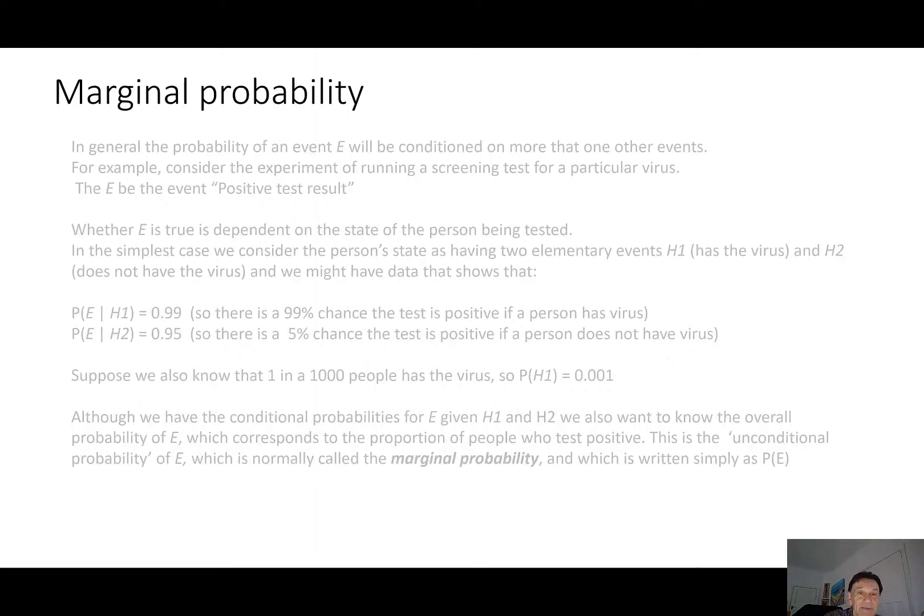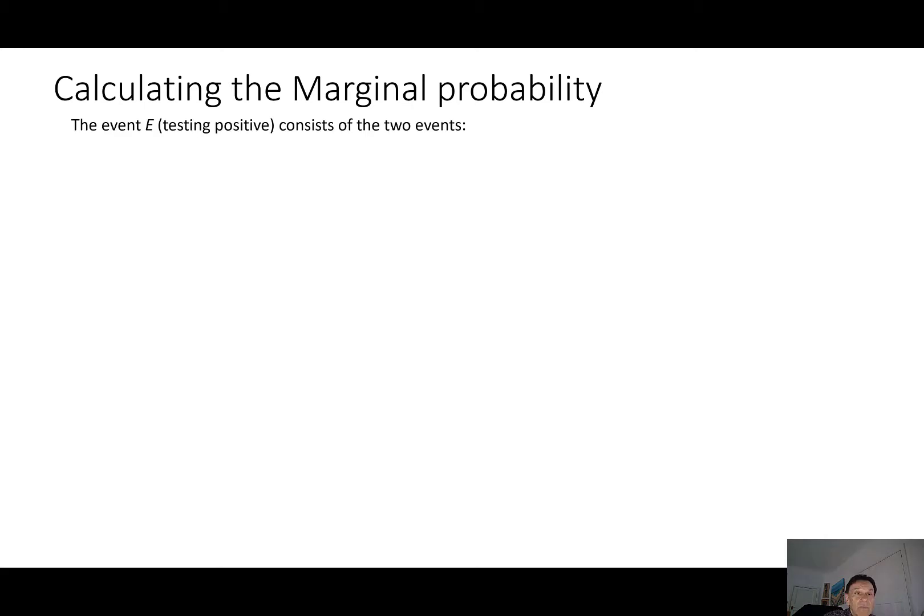So the question is, how do we actually calculate this marginal probability? First of all, the event E, testing positive, actually consists of two elementary events in this case.